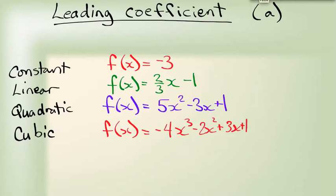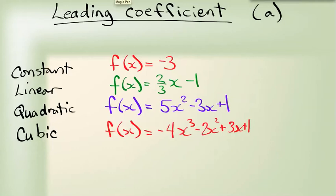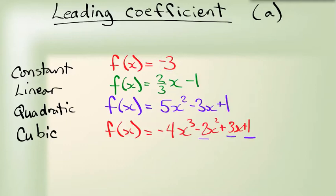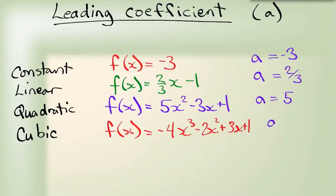The next thing we need to look at is the leading coefficient. Coefficients are the numbers in front of the X. The leading coefficient is the coefficient on the highest-degree term. For example: on the cubic function, the leading coefficient is −4; on the linear function, it's 2/3; on the quadratic function, it's 5; and on the constant function, it's −3, also referred to as 'a'.